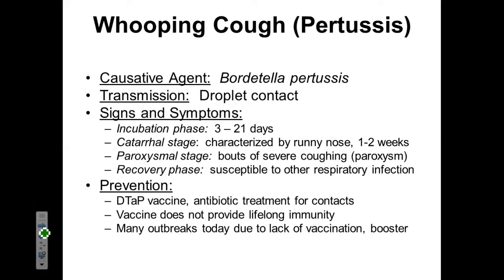The catarrhal stage is characterized by a very runny nose for one to two weeks. Then we have the paroxysmal stage, which is where we have paroxysms — bouts of very severe coughing. This severe coughing is oftentimes so bad that the patient doesn't have time to inhale air and can start to suffer from a lack of oxygen and a buildup of carbon dioxide in their bloodstream. Finally, there is the recovery phase, during which the patient, while not necessarily exhibiting the symptoms of whooping cough, is still quite susceptible to other respiratory infections because of the damage accruing within their mucous membranes.